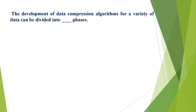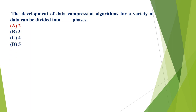The development of data compression algorithms for a variety of data can be divided into: A) 2, B) 3, C) 4, D) 5 phases. The correct option is A, two phases.